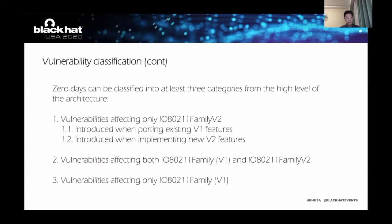Further, if we deeply analyze the first category — vulnerabilities affecting all of family version 2 — we can find that it can be broken down as: 1.1, introduced into V2 when porting existing V1 features; and 1.2, introduced into V2 when implementing new features. We will discuss them one by one.